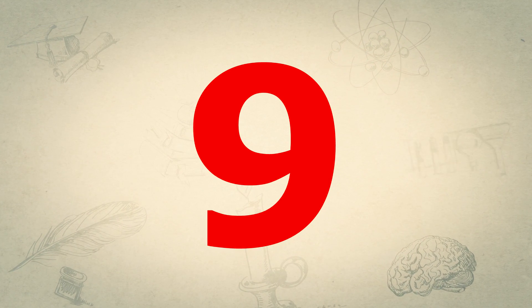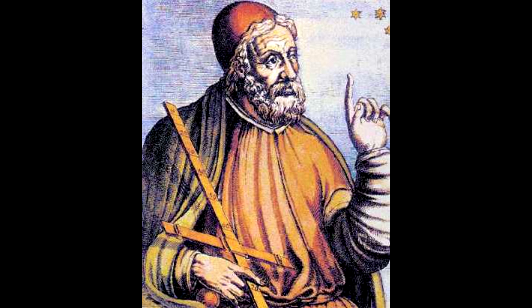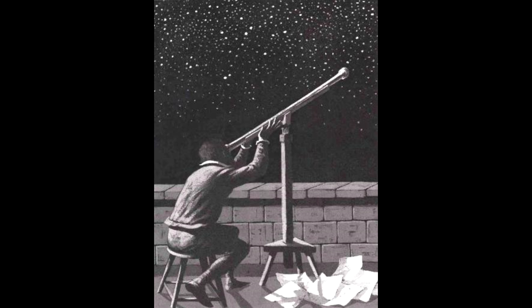Number 9. Ptolemy. Ptolemy was an Egyptian astronomer, geographer, and mathematician of Greek ancestry. He lived from 90 to 168 AD, and was the last great astronomer before the known world's descent into the Dark Ages.